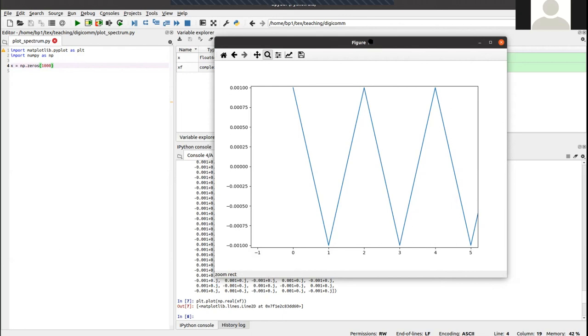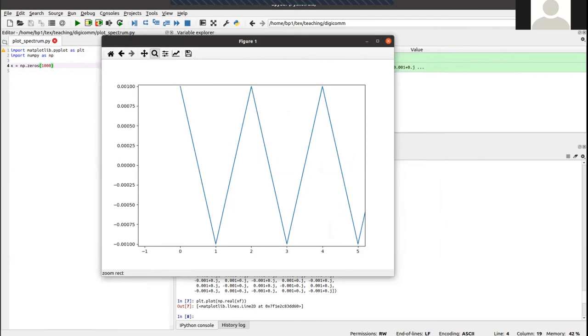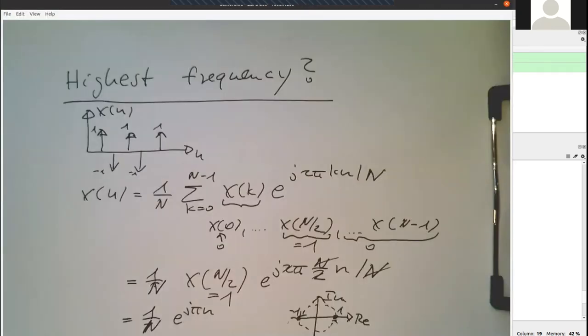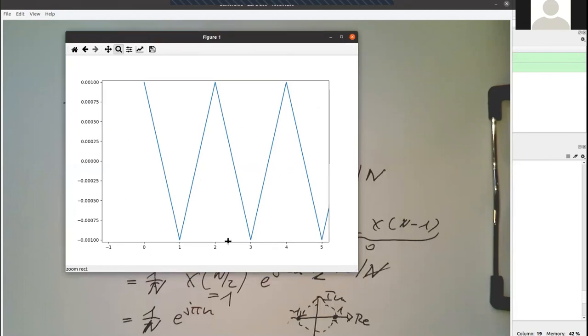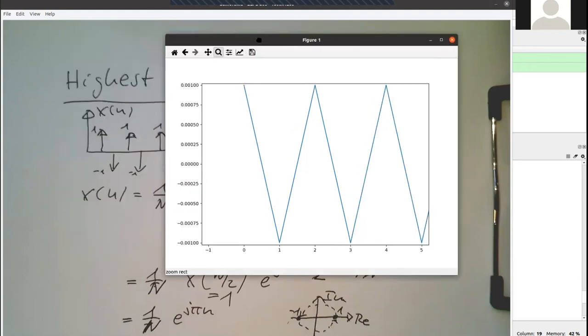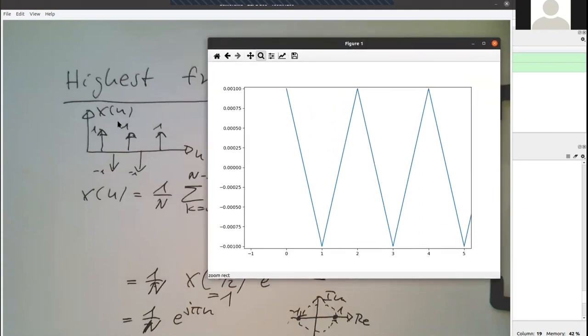Yeah, so remember this formula here that we had these alternating values: equals one, minus one. And remember this is divided by number of samples N, that's the reason why it's 0.01. That's what we were hoping to expect here, and we see this works.